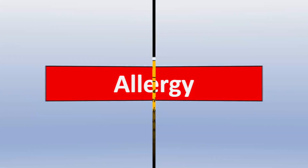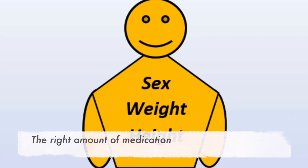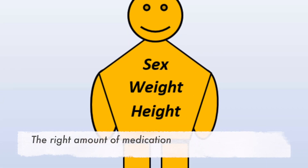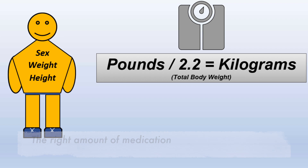The majority of the medications you receive are given to you based on your weight in kilograms, also known as your total body weight. You can get this by dividing your weight in pounds by 2.2. With your weight in kilograms, we can then use your sex and height to calculate other types of your weight, which help us give you a more precise amount of certain medications.